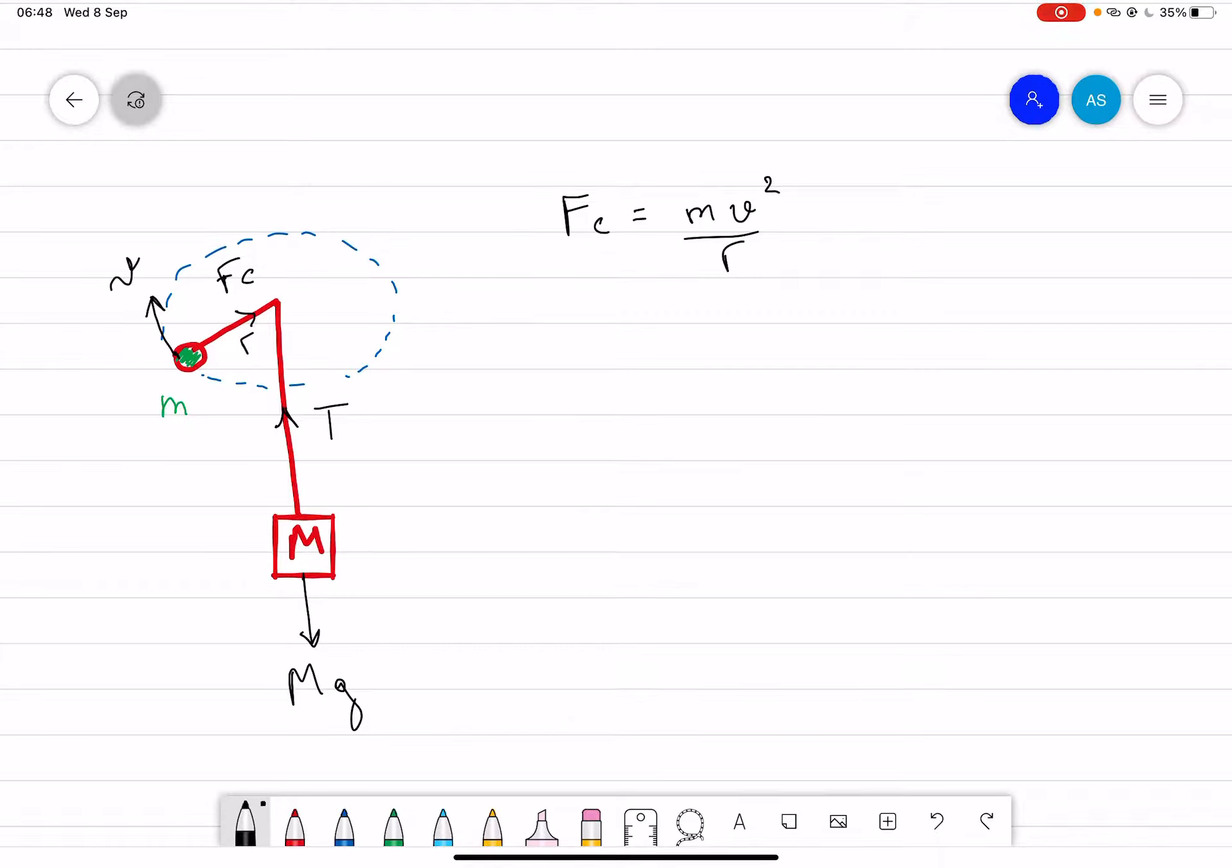And we also know that the tension here is equal to the mass times g. And since F centripetal is connected to the same rope, we can say that it's equal to the capital mass times g.